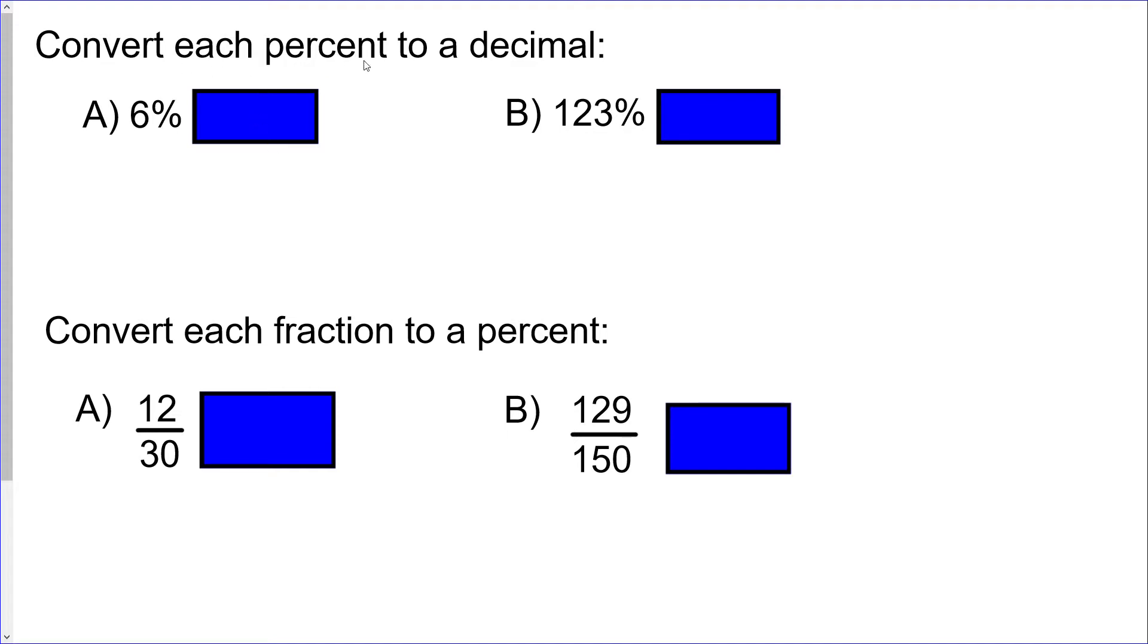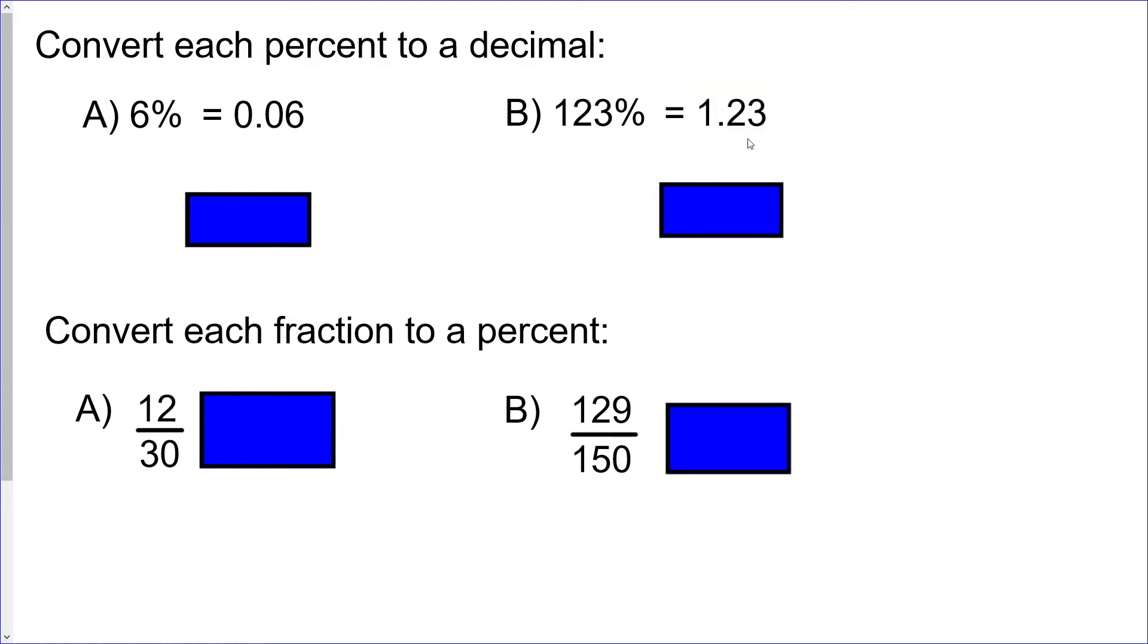So converting each percent to a decimal, remember all you need to do with these is divide by 100. So divide 6 by 100 or just pop that decimal place 2 over to the left and add in 0 in front. So 0.06 and 123% same thing you end up with 1.23. Remember because it is over 100% you should have a number other than 0 in front of that decimal place.